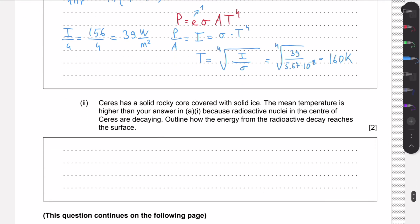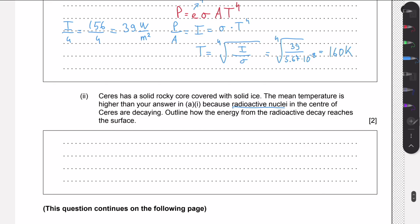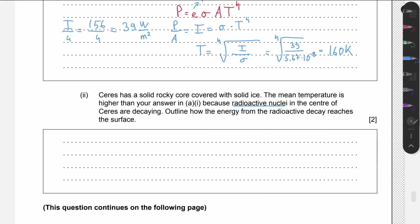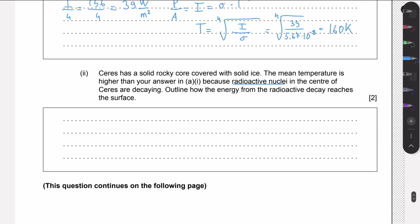In the next question, we're given that the mean temperature is higher than our answer in this part because radioactive nuclei in the center are decaying. We need to explain how energy from the radioactive decay reaches the surface.